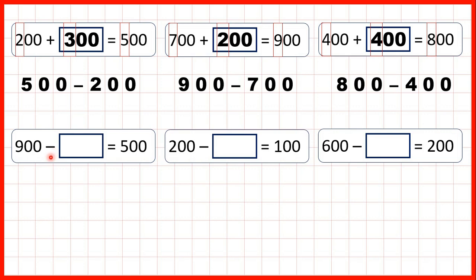So now, onto subtraction, we have 900 minus something equals 500. So here it's the second number of our subtraction that's missing.